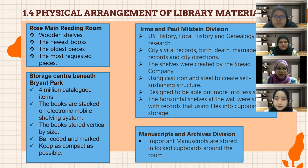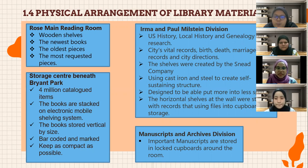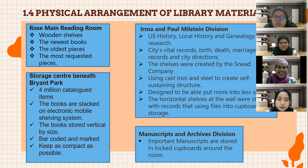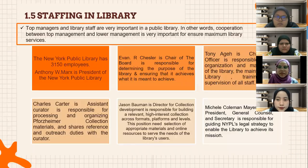The books are kept as compact as possible on the shelves. Next is the Irma and Paul Milstein Division, which houses U.S. history, local history, and genealogy research, as well as city vital records including birth, marriage records, and city directories. The shelves were created by the Snead Company using cast iron and steel to create a self-sustaining structure designed to put more into less space. The horizontal shelves at the wall were tagged with records filed into cardboard boxes. In the manuscript and archive division, important or valuable manuscripts are stored in long cardboard around the room.